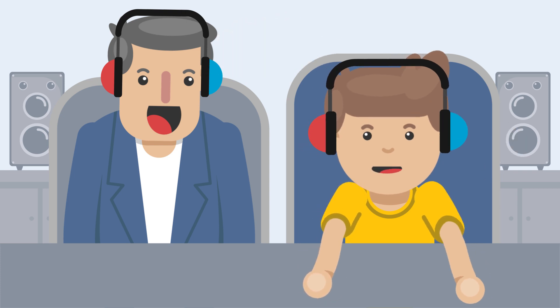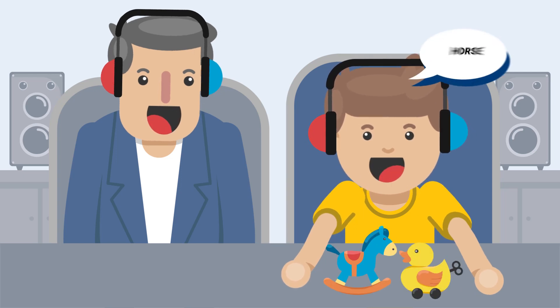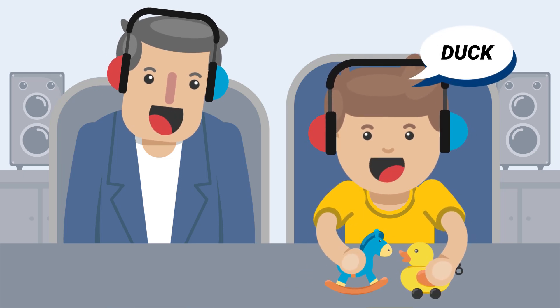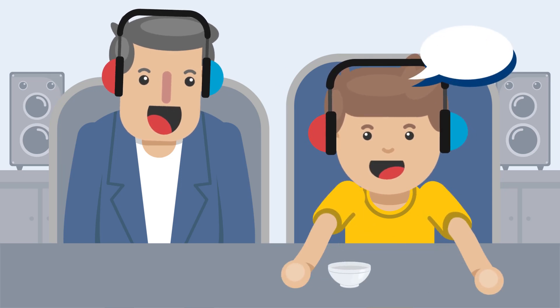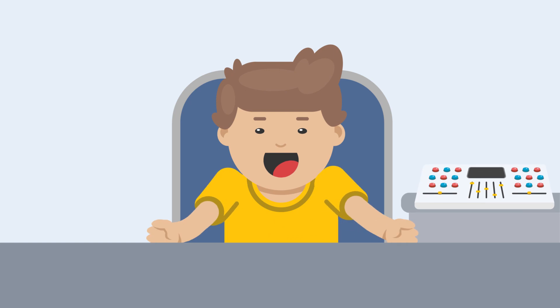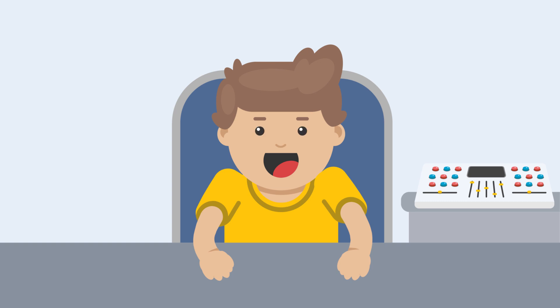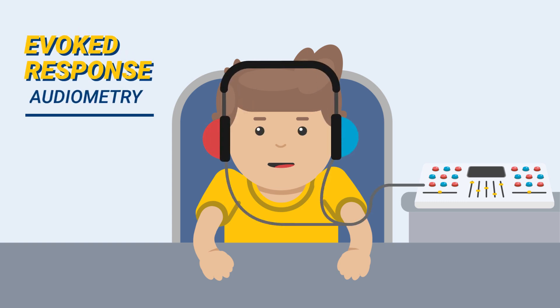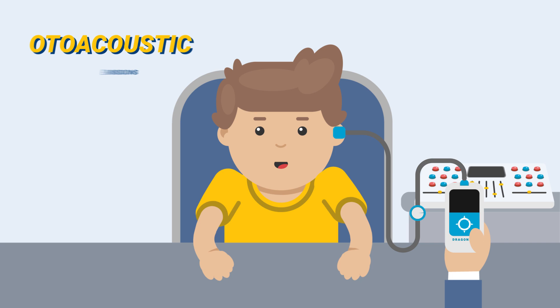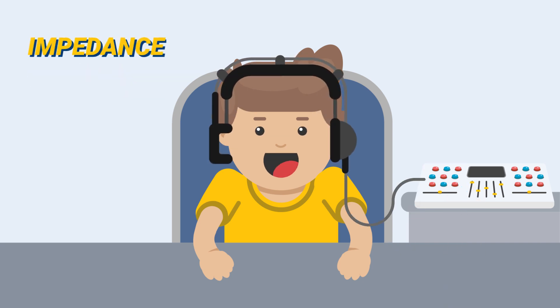The test can also be used to examine the child's expressive ability when asked to name toys like horse, duck, or objects like cup, plate, etc. E - Objective Tests: These tests are ideal for hearing assessment in children as they give results without needing cooperation from the child. These include: 1) Evoked Response Audiometry, 2) Otoacoustic Emissions, and 3) Impedance Audiometry.